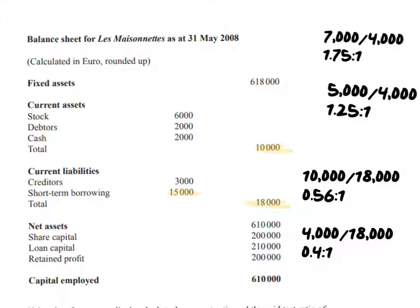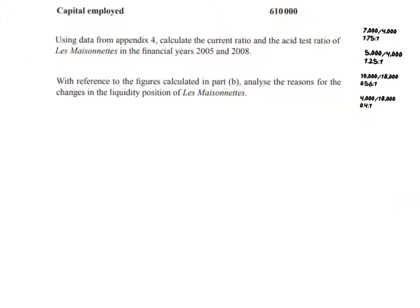The short-term borrowing may have long-term impacts and could bring long-term gains. There's obviously a worry from these ratios, but it's not all doom and gloom. The first exam question simply asked you to calculate the current ratio and the acid test ratio — for AQA just the current ratio — and we've already done that, so that question is answered.